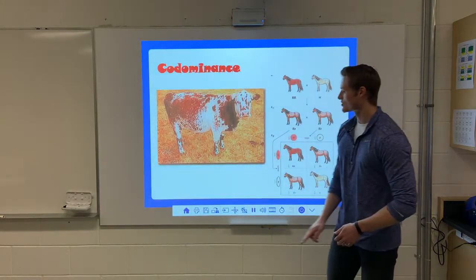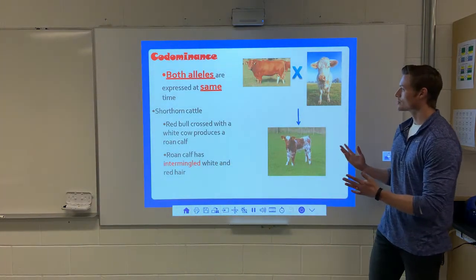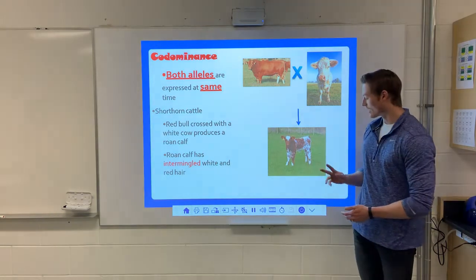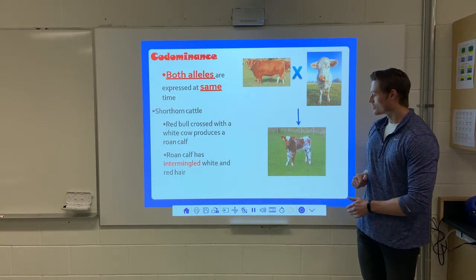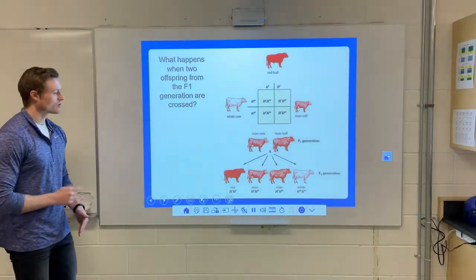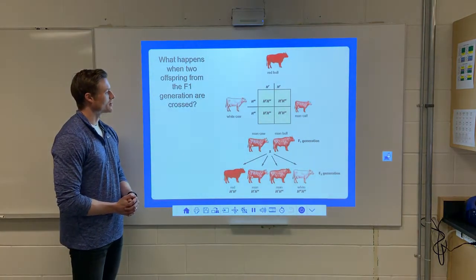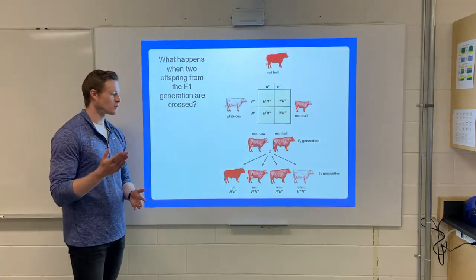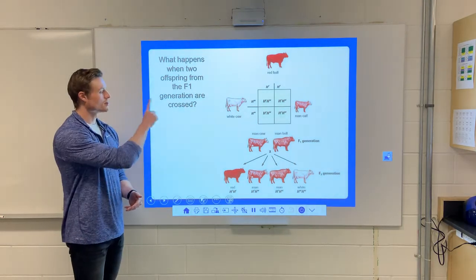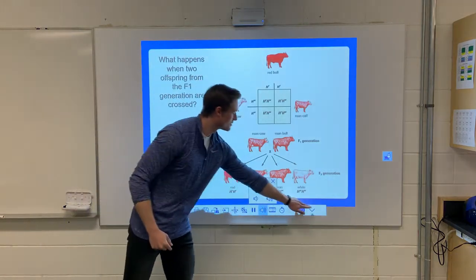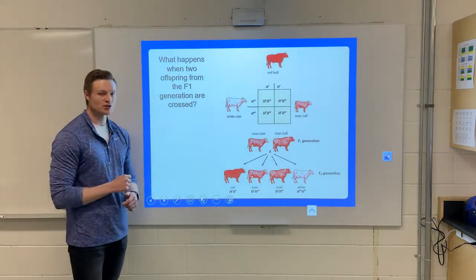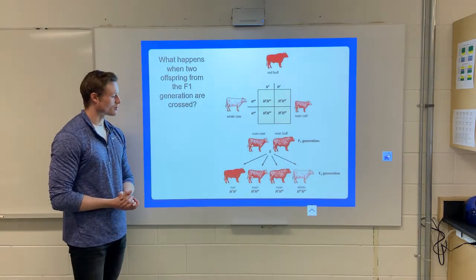Next, co-dominance. This is where both traits show up. For example, with cattle — we have red and we have white. When we mix them together, we get a roan calf, which is a mixture of red hair and white hair. If we do a cross of a red bull and a white cow, since it's co-dominance both traits show up and we get 100% roan calves. If we then mix two roan calves together, we get a 1 to 2 to 1 ratio: 25% red, 50% roan, 25% white — just like incomplete dominance.